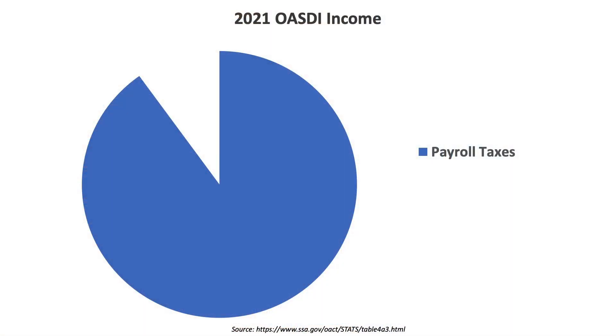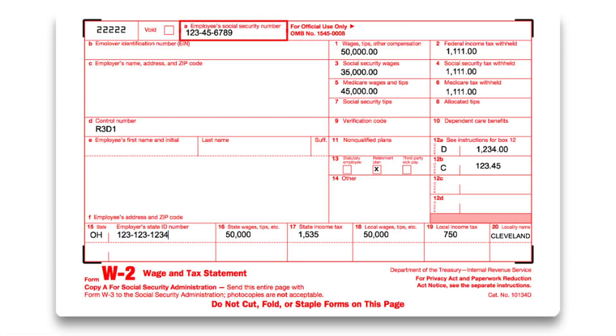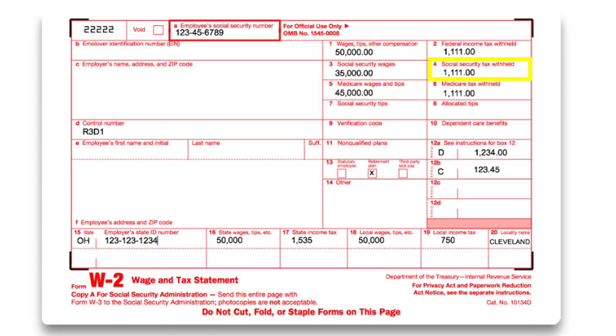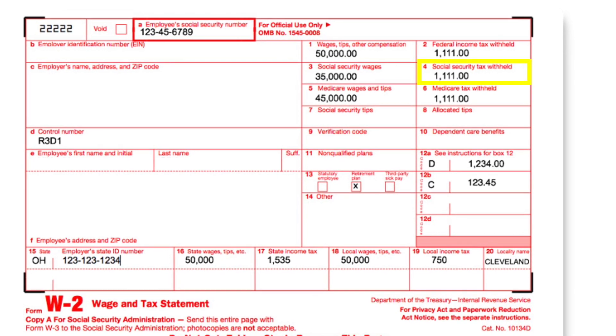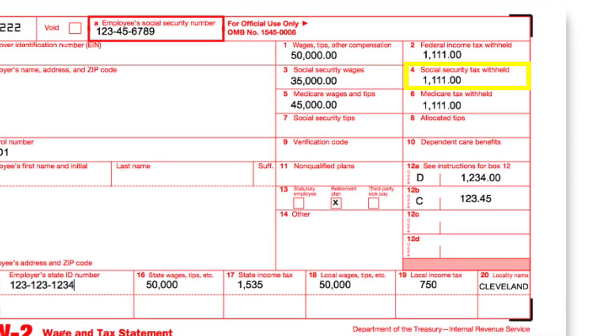So let's talk about the income that comes in. In 2021, the trust funds had just over a trillion dollars in income. The largest piece of income to the trust fund is through the payroll tax. If you look at your W-2, you'll see your contributions to the Social Security system through this payroll tax. The total tax is 12.4%, but if you're an employee, one half of that is paid for you by your employer, meaning most people pay 6.2% to the Social Security trust funds.